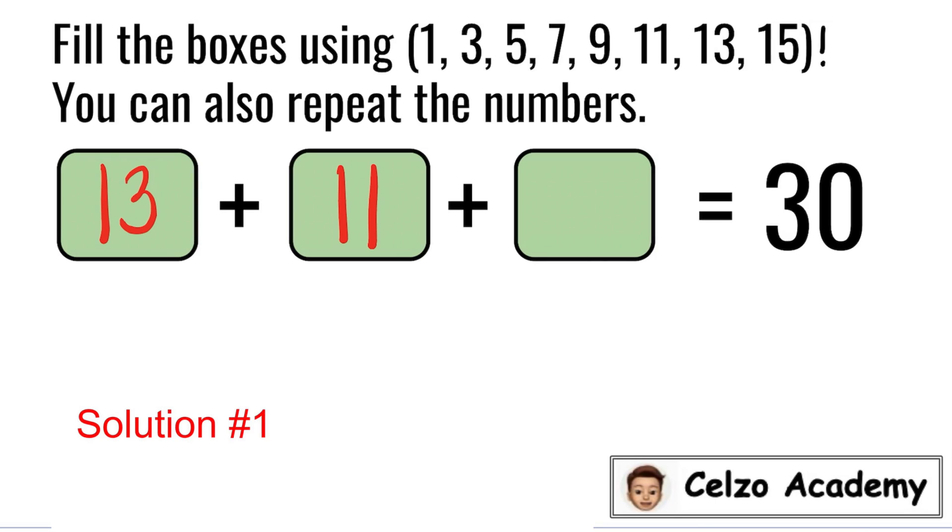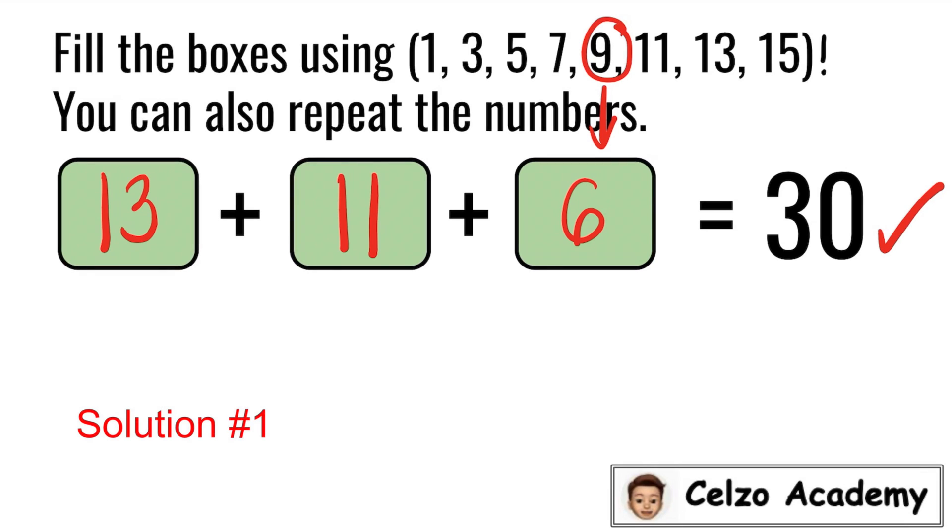Can you read what I'm thinking? I will use the number 9 and I will rotate this number 9 180 degrees to form a 6. So here we go. 13 plus 11 plus 6 is equal to 30. There's nothing in the instruction that we are not allowed to rotate numbers. So 9 can be written as a 6. 13 plus 11 plus 6 is equal to 30. You may also rearrange the numbers 13, 11, and 6 to get a sum of 30.